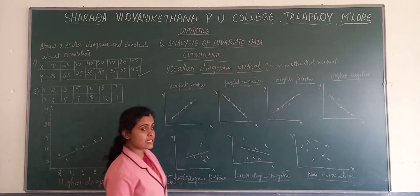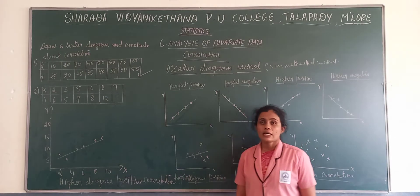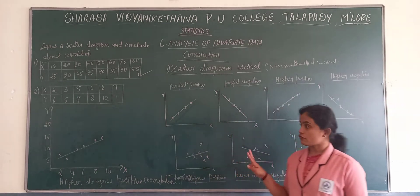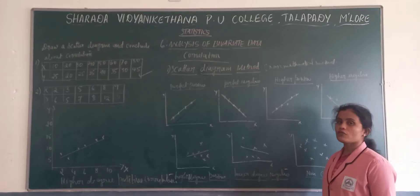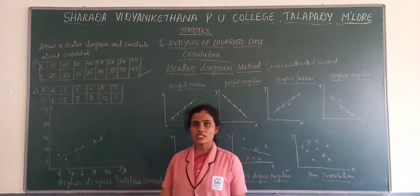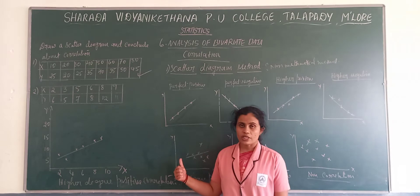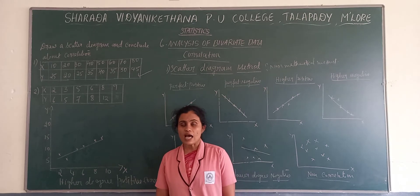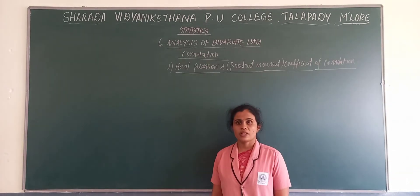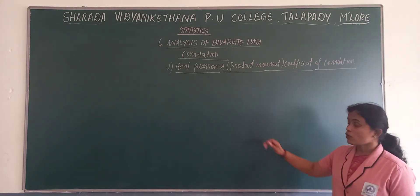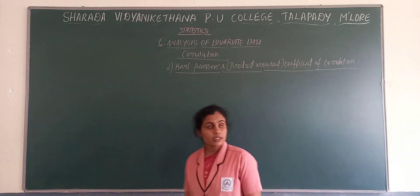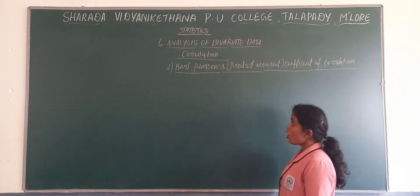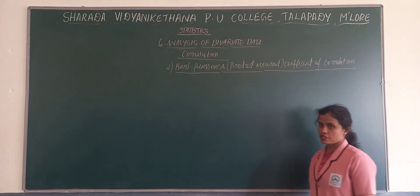This is about the scatter diagram method. These two problems are enough — same way you have to draw and see which kind it is. For that, you should know the kinds of scatter diagram method. This is the first method of measuring correlation. Next, we move towards the second method of measuring correlation, that is Karl Pearson's coefficient of correlation — also called Karl Pearson's product moment coefficient of correlation.